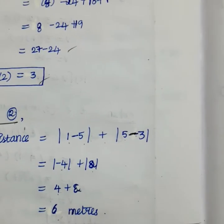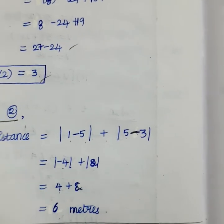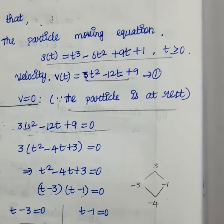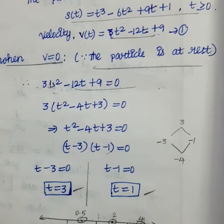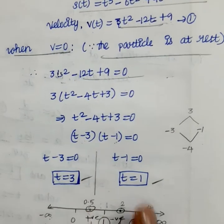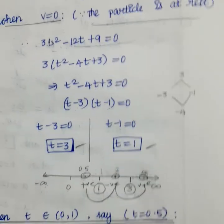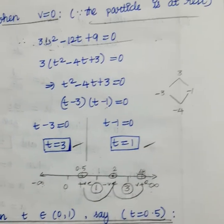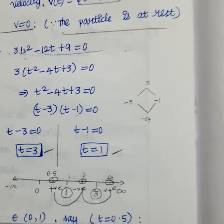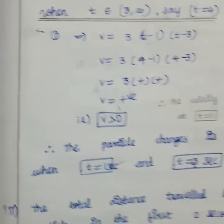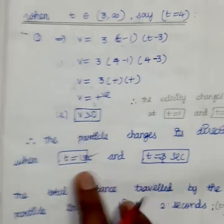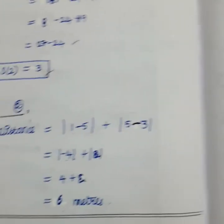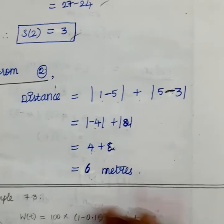Summary: First subdivision — particle is at rest at t = 1 and t = 3. Second subdivision — particle changes direction at t = 1 second and t = 3 seconds. Total distance traveled in the first 2 seconds is 6 meters.